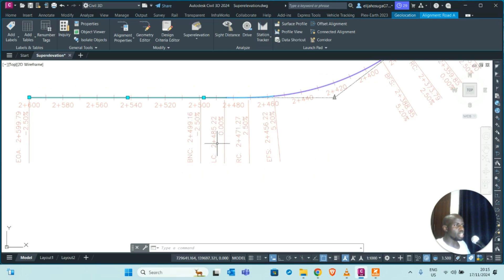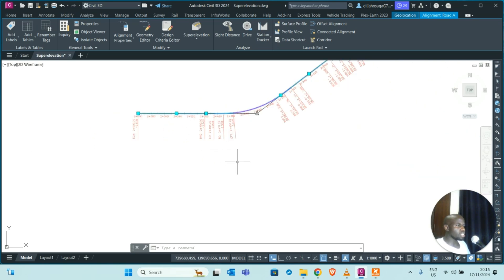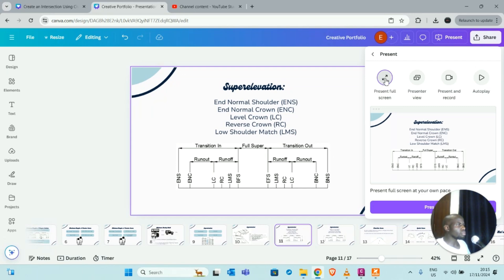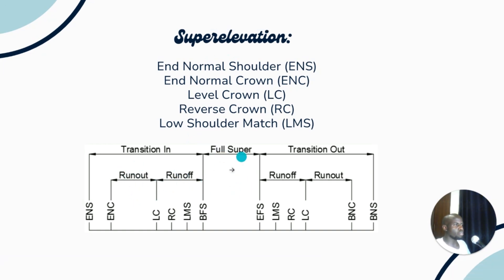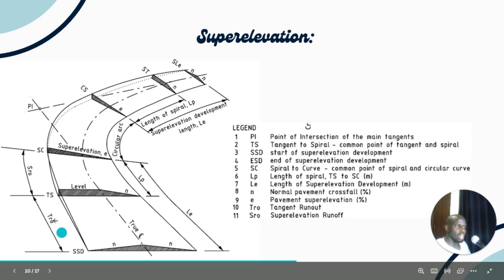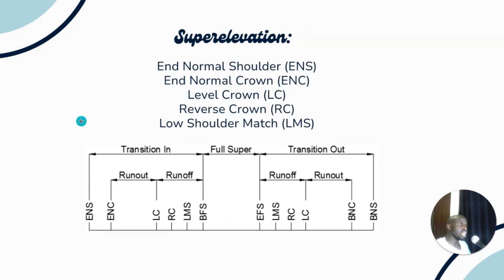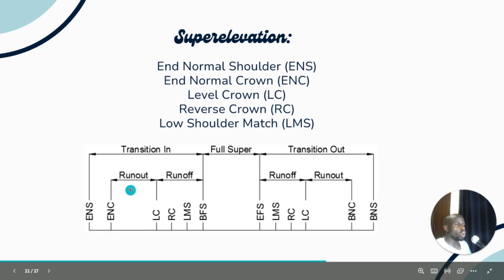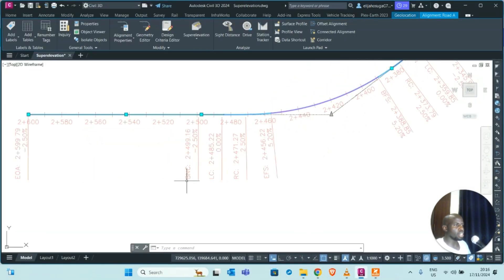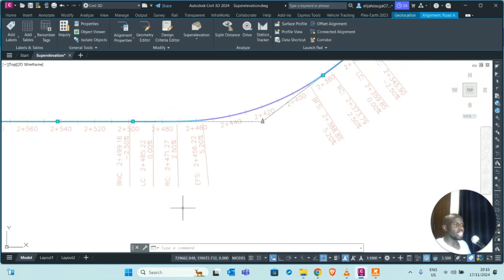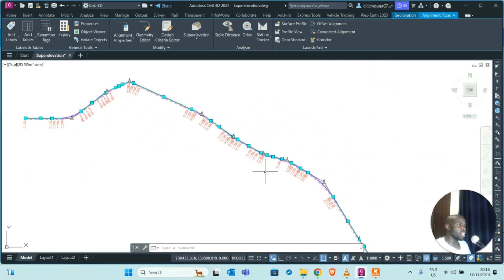You can see the level crown where one side of the road becomes flat and the other side is banked. Looking at the table: there is a runout, then a runoff, then a point where the road is fully super elevated. The acronyms shown are: end of normal shoulder, end of normal crown at the runout distance where the cross section starts super elevating, then the level crown. This coincides with what we see on the alignment. So you have the beginning of normal crown, then the level crown, then the reverse crown — and that's basically how you do super elevation.